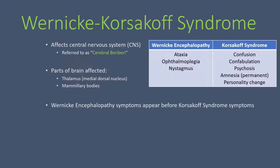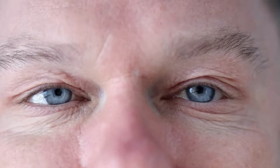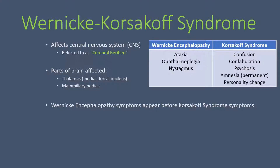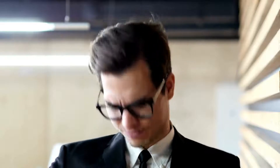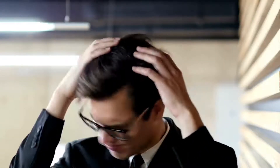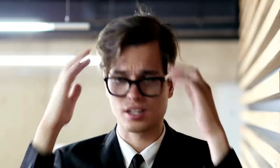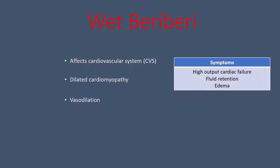Wernicke's encephalopathy presents with ataxia — loss of coordination — ophthalmoplegia — weakness of the eye muscles — and nystagmus — rapid uncoordinated eye movements. These are common CNS manifestations. For Korsakoff syndrome, it's worth remembering the permanent amnesia, or permanent memory loss, associated with it, as that is fairly unique to this condition.